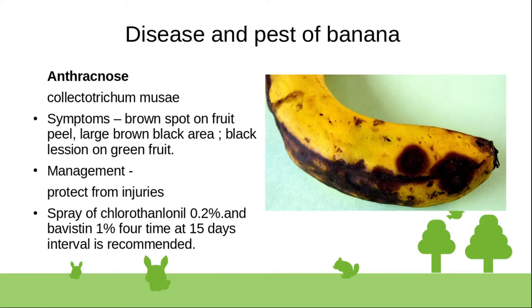Management of anthracnose includes protecting fruit from injury. Chemical control involves spraying with chlorothalonil at 0.2 percent and carbendazim at 1 percent, four times at 15-day intervals.